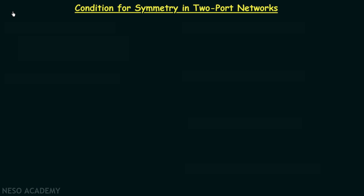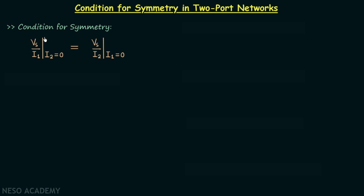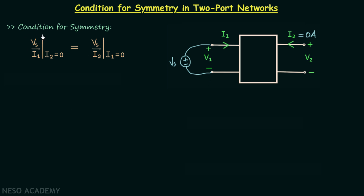We are familiar with the concept of symmetry in two-port networks. Following that concept, we obtained the condition for symmetry: Vs over I1 when I2 equals 0 should equal Vs over I2 when I1 equals 0. To evaluate the left-hand side, we connect a voltage source Vs between the terminals of port 1 and open-circuit port 2. Vs is the excitation, I1 is the response, and I2 = 0 signifies port 2 is open-circuited.